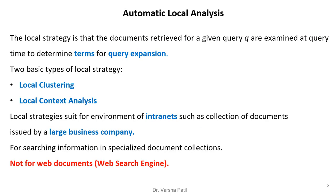The local strategy is that documents returned for a given query are examined at query time to determine terms for query expansion — analysis takes place once the results are displayed. Two basic types of local strategy are: local clustering and local context analysis. Local strategies are suited for intranet environments, such as collections of documents issued by large business companies for searching information in specialized document collections, but are not suitable for web documents or web search engines.